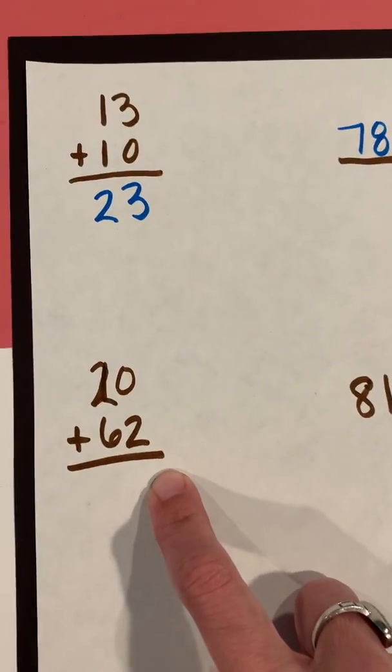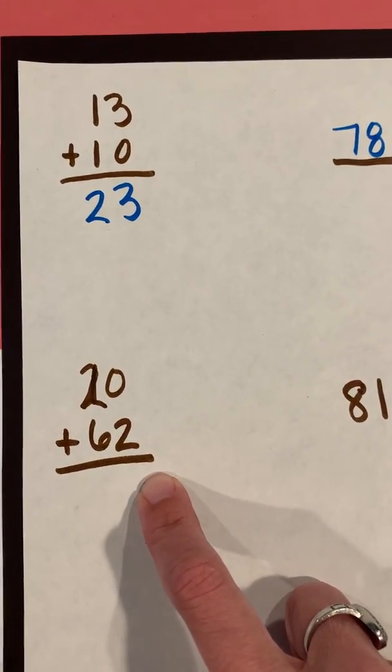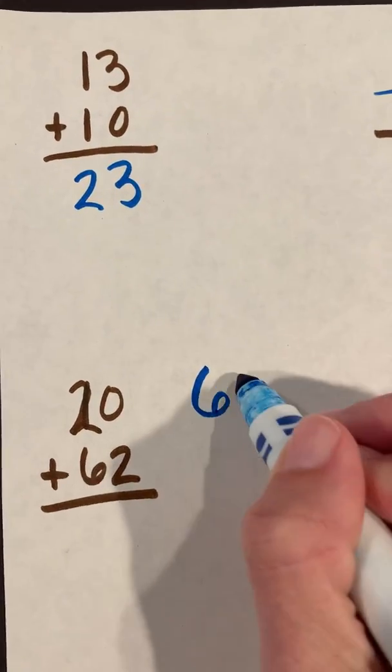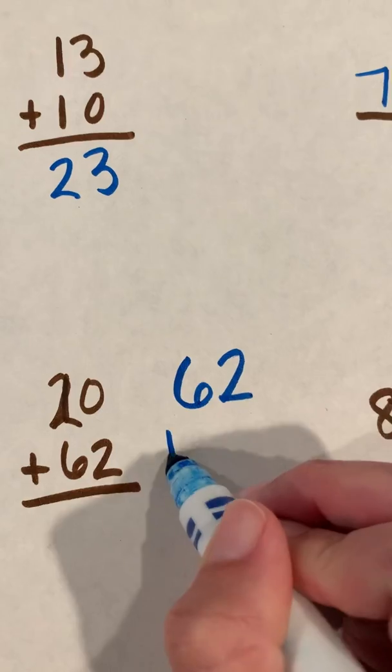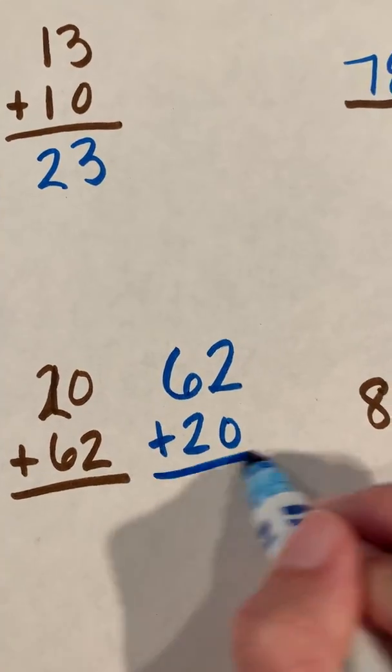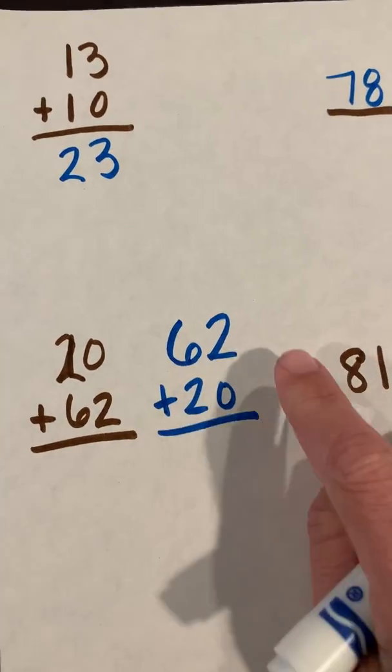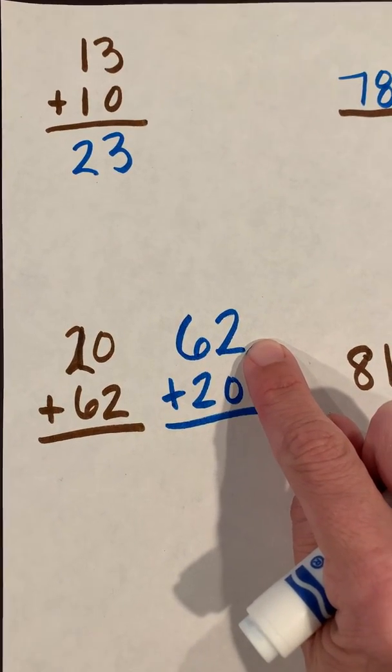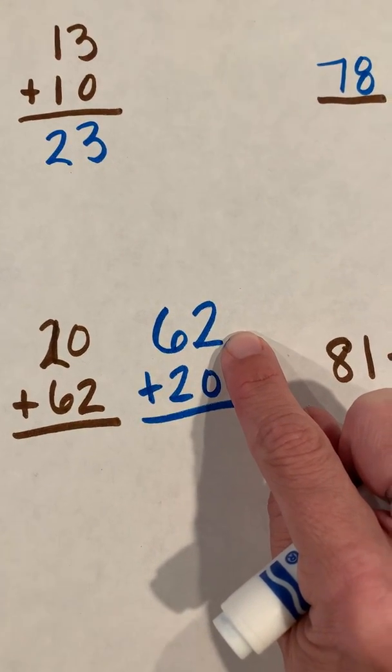So now let's try another one: 20 plus 62. Now remember with the commutative property, which means I can change the order of the numbers when I'm adding only, not with subtracting. I can think of it as 62 plus 20. So I want you to close your eyes and picture that hundreds chart. Find 62.